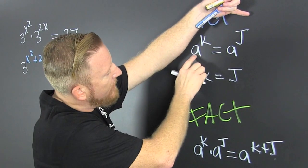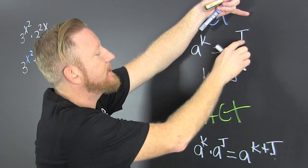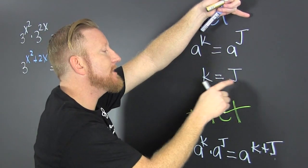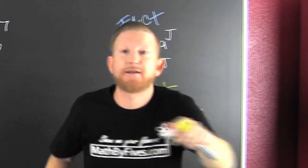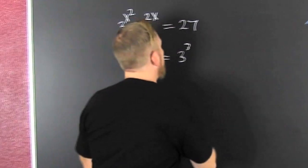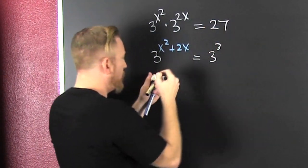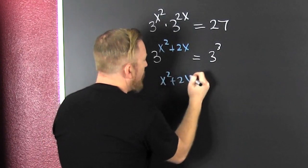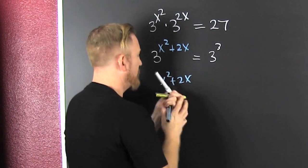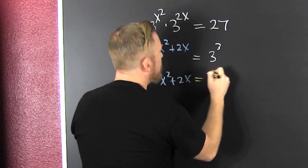I have this guy. If I have a to the k equals a to the j, then k is equal to j. It just has to be. It's fact. Now what? This guy over here. I have 3 to this and 3 to that, so then x squared plus 2x is equal to 3.